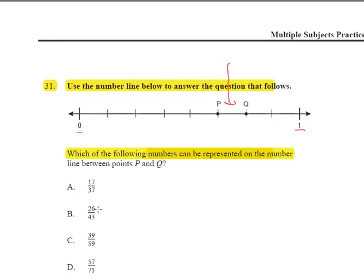17 over 37, 26 over 43, 39 over 59, 57 over 71, and what I can tell you is that it is going to be infinitely easier for you to figure out what's going on in here if you use your calculator and convert everything to fractions and then to decimals. Okay, so the first thing that we need to determine is this.